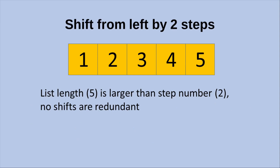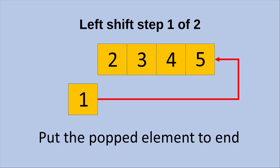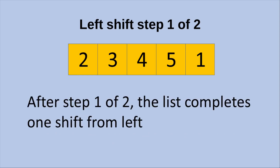Now let us see another example of the shifting from the left-hand side by two steps. The list length, which is 5, is larger than the step number, which is only 2, so we have no redundant shifts. When we do the left shifting, we have to pop the first element out of the list, and then put the popped element to the end of the list. After the first step out of two, the list completes one shift from the left, and the elements will be in the order: 2, 3, 4, 5, and 1.